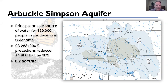In 2003, Senate Bill 288 passed and effectively reduced the equal proportionate share of the aquifer by 90%. For aquifers not studied in Oklahoma, there is an equal proportionate share of two acre feet per acre. The Arbuckle-Simpson also had that designation, but after a lengthy and expensive study by the USGS and others, that number was reduced to 0.2 acre feet per acre — a 90% reduction.